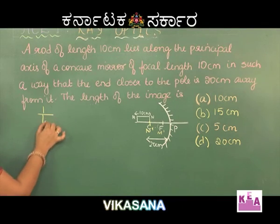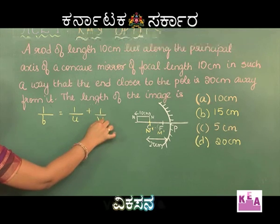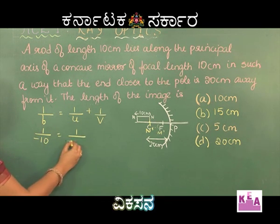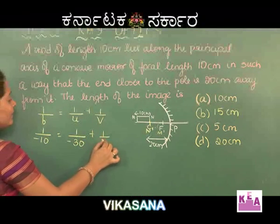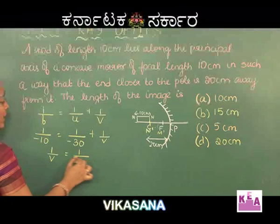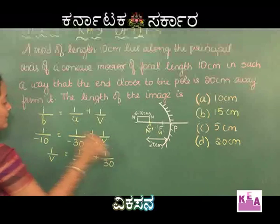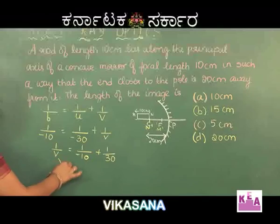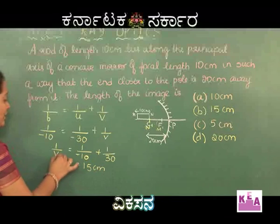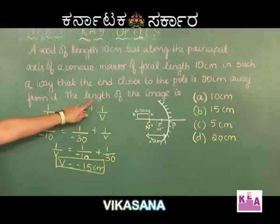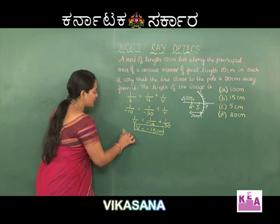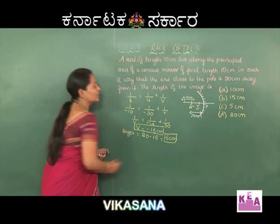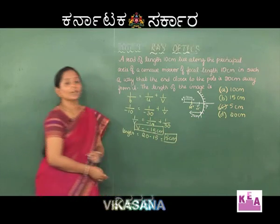To find the length of the image, we first find the image distance using the mirror formula: 1/f = 1/u + 1/v. For a concave mirror: 1/(−10) = 1/(−30) + 1/v. So 1/v = −1/10 + 1/30, which simplifies to give image distance v = −15 centimeters. The length of the image is 20 − 15 = 5 centimeters. The correct option is C: 5 centimeters.